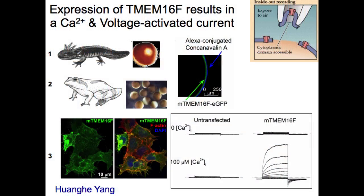To understand the basic properties of TMEM16F, we expressed it in three different heterologous expression systems, namely salamander oocytes, frog oocytes, and HEK293 cells. With robust surface expression, a calcium and voltage-activated current was recorded from TMEM16F-expressing cells, but not from untransfected or un-injected cells.